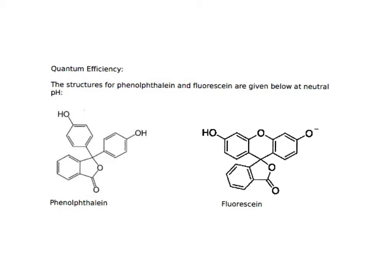For this problem, we're asked to assess the difference in quantum efficiency for phenolphthalein and fluorescein, given the structures below. We see that fluorescein is able to fluoresce, given the fluorescence versus wavelength spectrum here. We're asked to explain the difference in quantum yield for the two compounds. Fluorescein is able to fluoresce while phenolphthalein doesn't, and that's because of the difference in quantum efficiency.